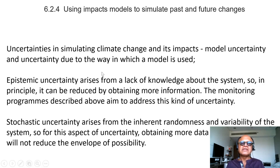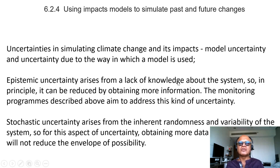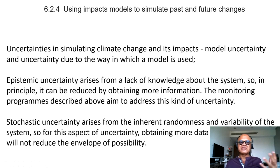Model uncertainty and uncertainty due to the way in which a model is used can be two different things. People may apply it in a way that is not what the model is designed for. Epistemic uncertainty basically comes from a lack of knowledge about the system itself, so we parameterize or represent it in some way, with intrinsic uncertainty introduced because of missing process understanding.